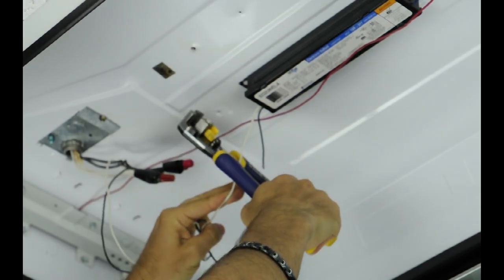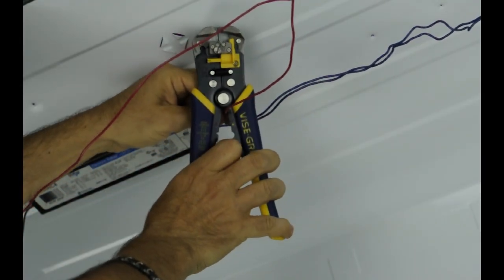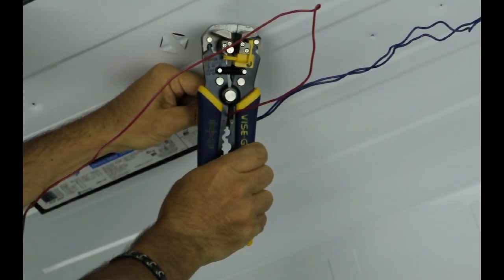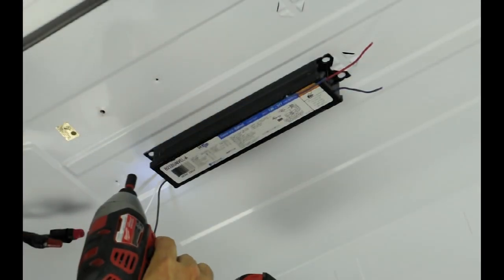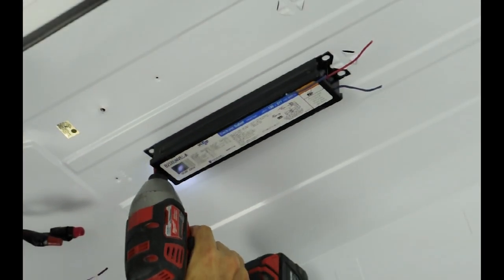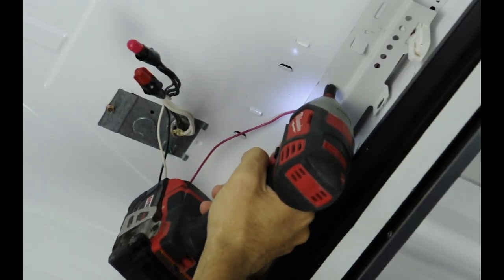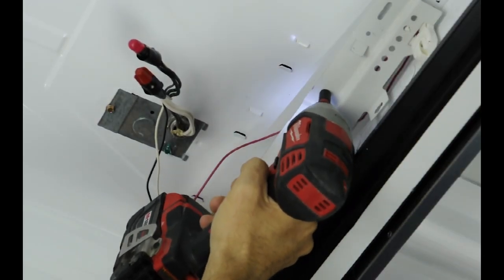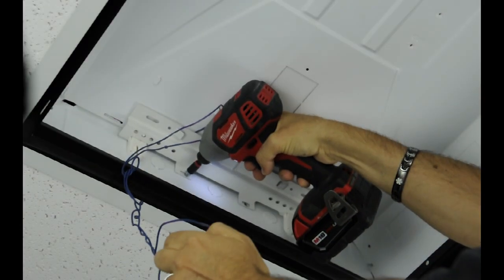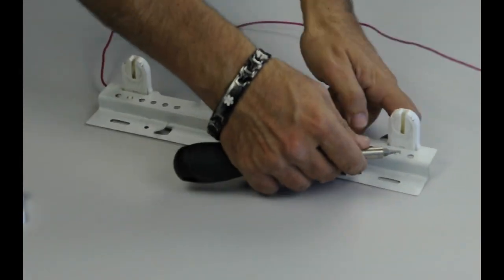Cut all ballast wires and remove the ballast. Remove the tombstone brackets. Remove the shunted sockets on both brackets.